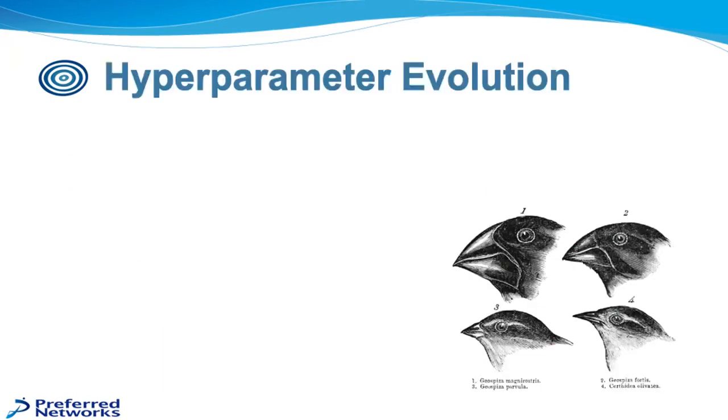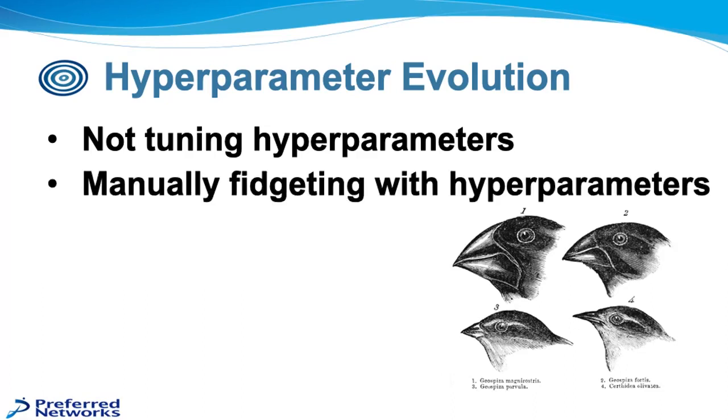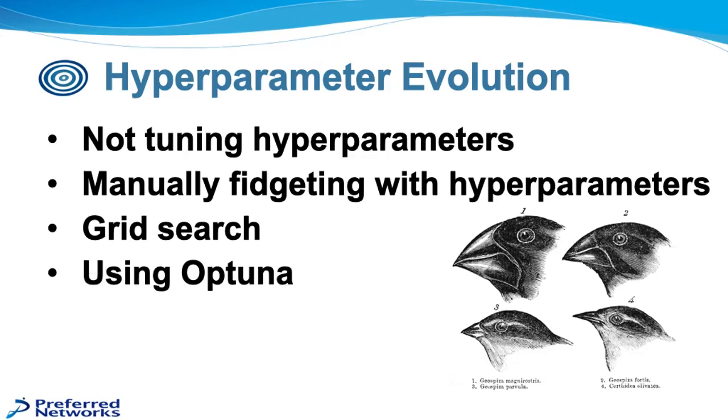So generally we find that most people go through a hyperparameter evolution. First, as I said, mostly not tuning the hyperparameters, using some values that are the default values or perhaps the values from the published paper that were recommended as the hyperparameter values, as opposed to finding out what's best for their particular dataset or situation. And then the next stage is usually manually fidgeting with the hyperparameters to see if they can tune or improve performance by changing them. And then maybe getting a little organized, making an Excel sheet or something else and starting to do a grid search to explore the space. And then hopefully, and I hope after listening to this presentation, you'll be interested in taking the final step of using Optuna to have your hyperparameters tuned for you automatically.